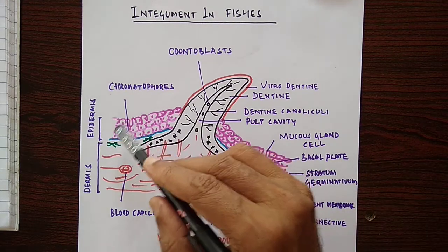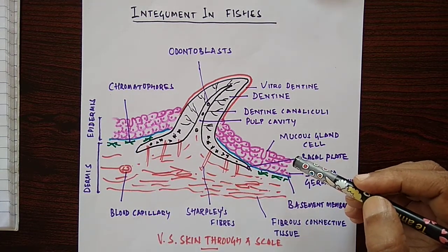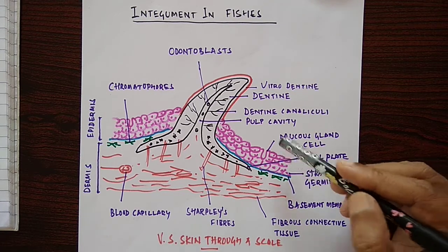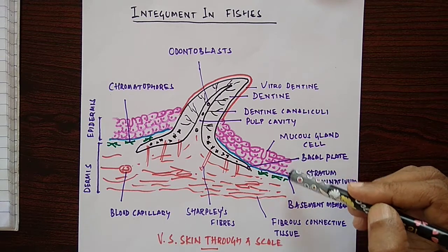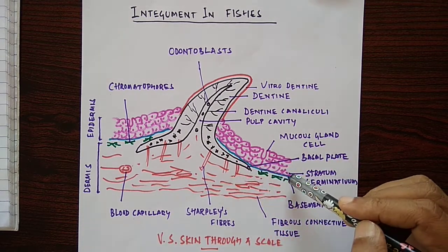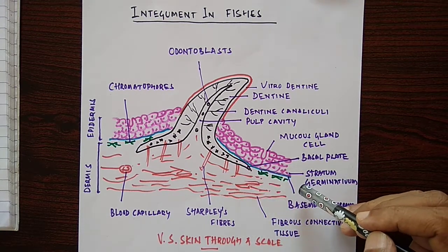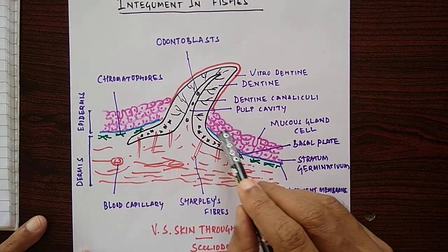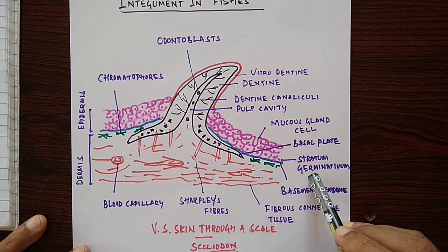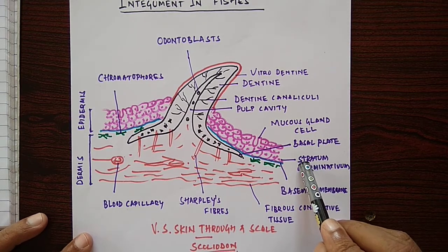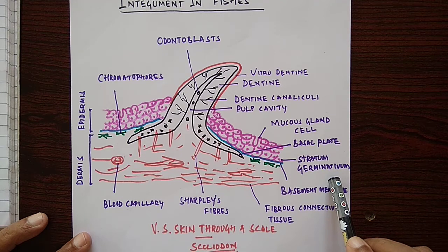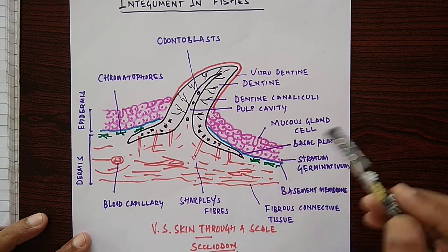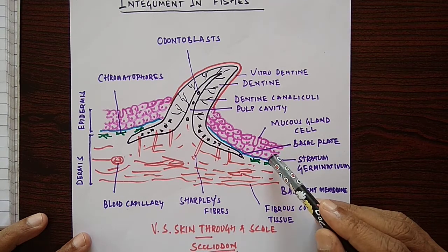Now we shall discuss the structure of epidermis. Epidermis is a stratified epithelium with several layers of cells. The innermost layer contains cuboidal cells, and this layer is called the stratum germinativum. The stratum germinativum undergoes mitotic division to produce similar types of cells.